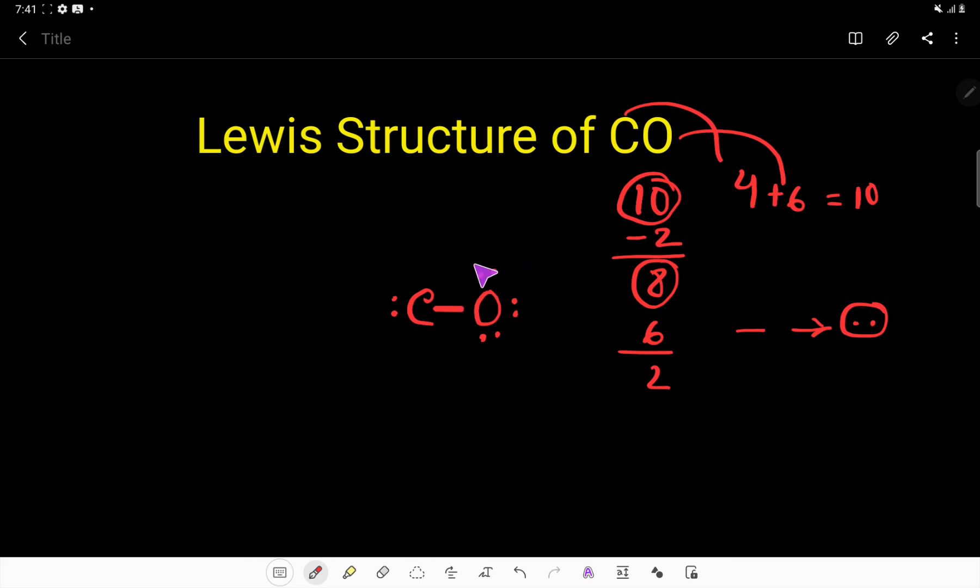use this lone pair of electrons. So here, for one lone pair we will make one bond. So now this carbon has 2, 4, 6 valence electrons, and